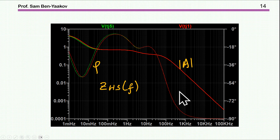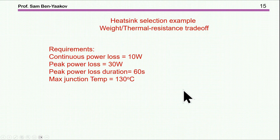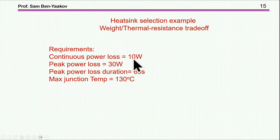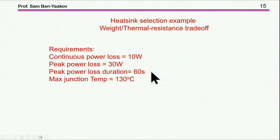Let me now move to perhaps a more important section: how to choose a heatsink. Starting with some requirements — suppose we have a continuous power loss of 10 watts, then a peak power of 30 watts, and we want the system to sustain this peak power for at least 60 seconds with a maximum temperature of 130°C. This is an example of how we can choose a heatsink.